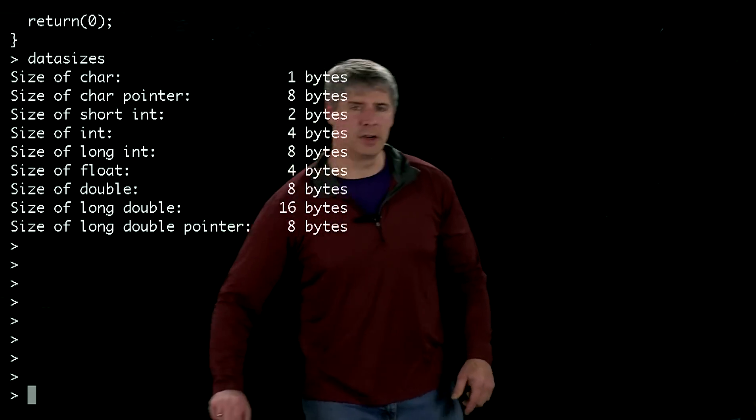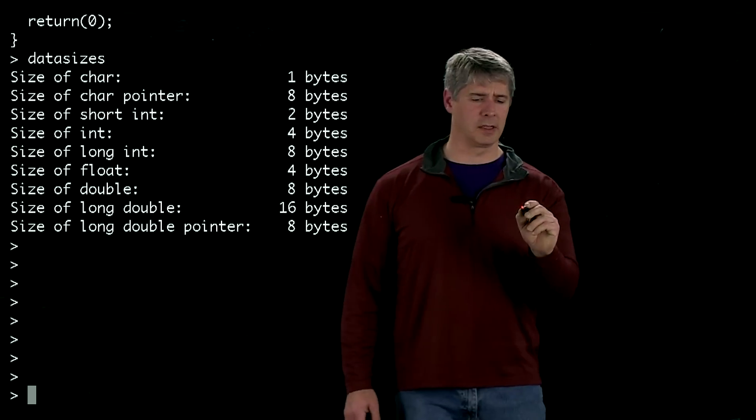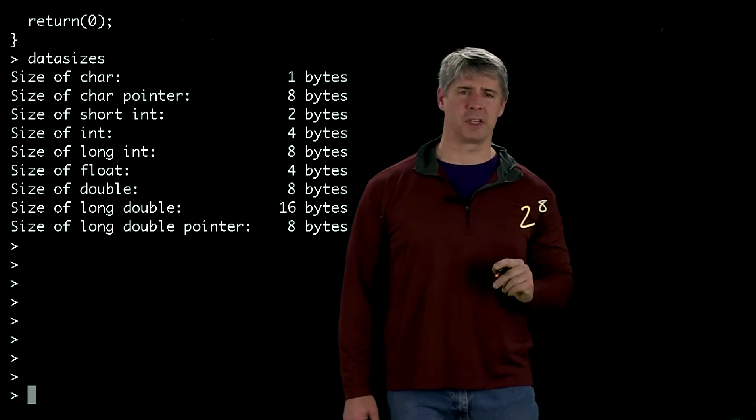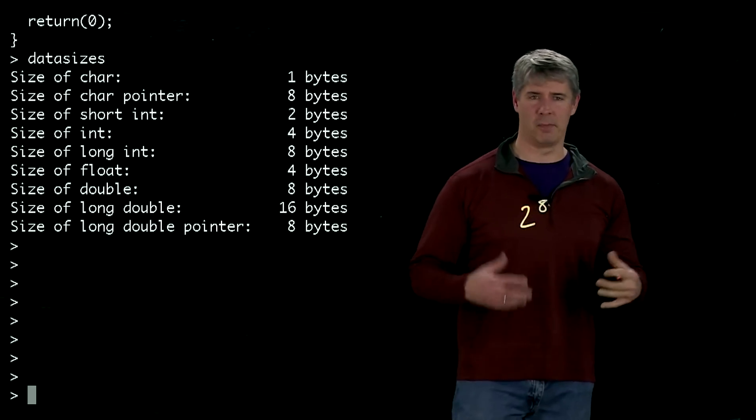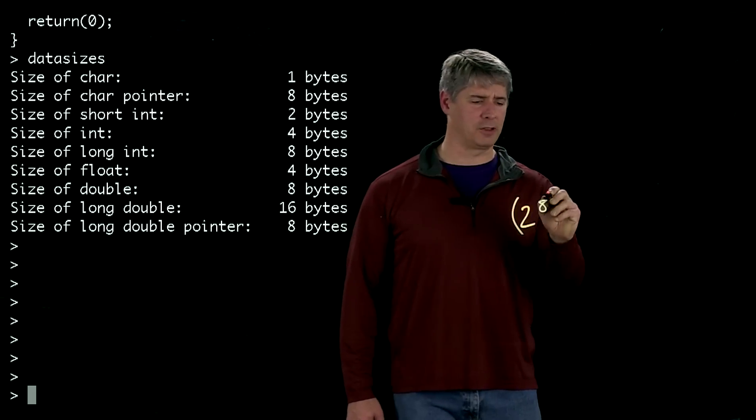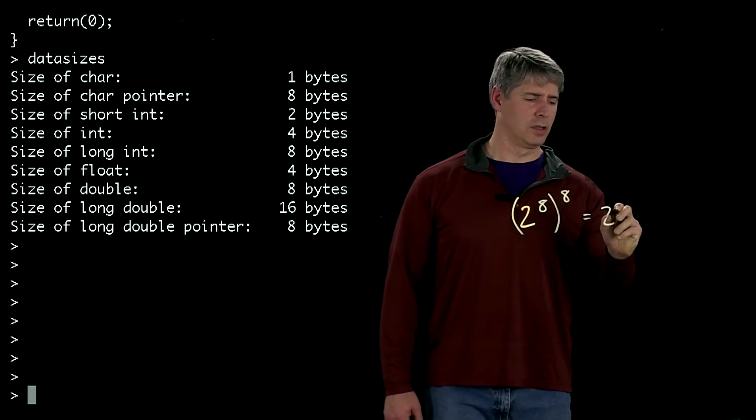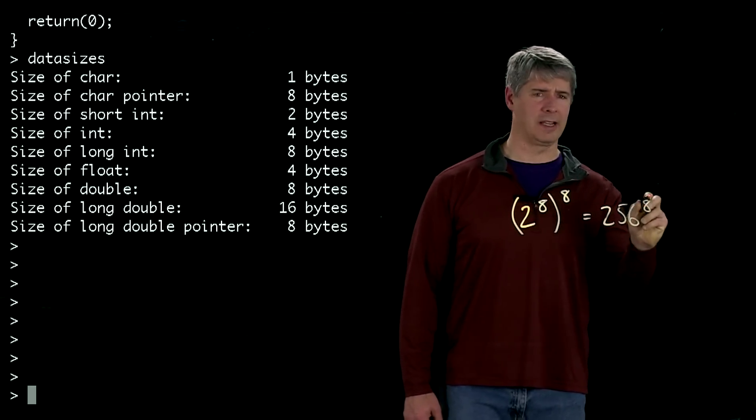So if you think about the number of memory locations that can represent, a single byte can represent 2 to the 8 numbers or addresses. Since we have eight bytes, we have 2 to the 8th to the 8th, which is equal to 256 to the 8th.